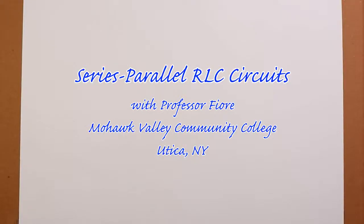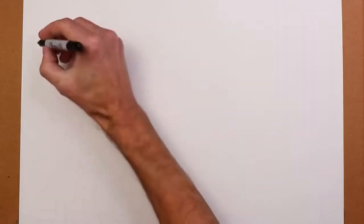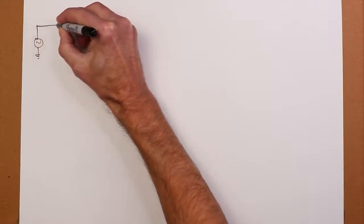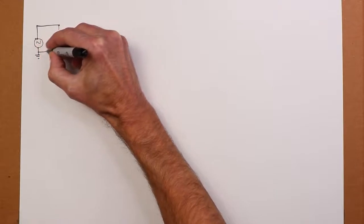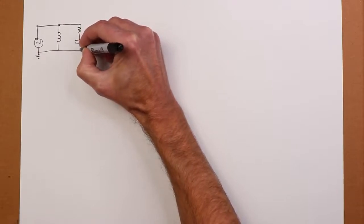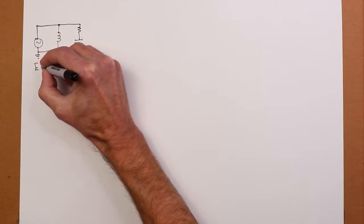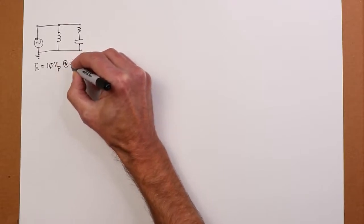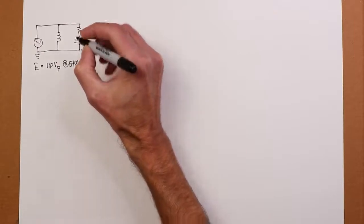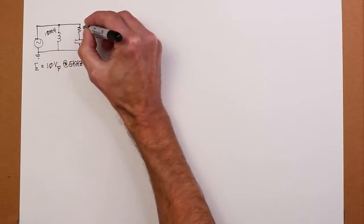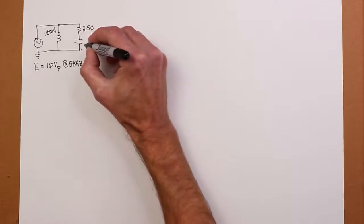Hello everyone. Today we're going to look at some series parallel circuits in the AC case. So let's start off with something fairly straightforward. I'm going to put an AC source over here and an inductor coming down and then in parallel with it a combination of a resistor and capacitor.